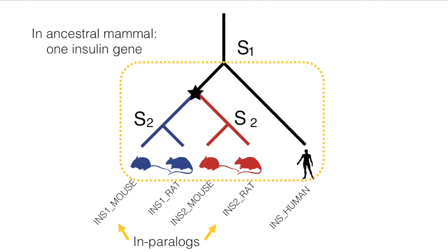As for the in-paralogs, these are genes related by duplication, but importantly these duplications must have happened within the clade in question. For instance, insulin 1 in mouse and insulin 2 in rat are in-paralogs relative to all mammals and are therefore in the same HOG at this level.